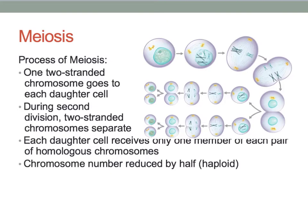The chromosome number has been reduced by half in each of the daughter cells. Haploid means having only one copy of each chromosome.